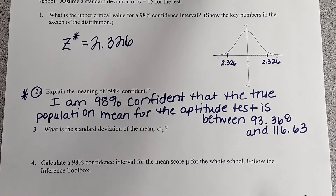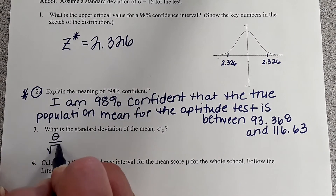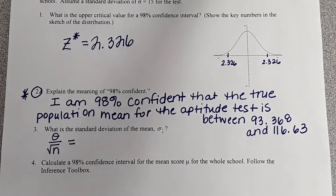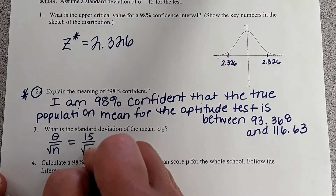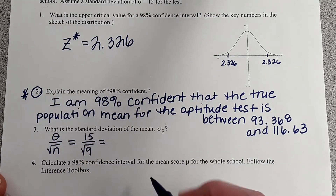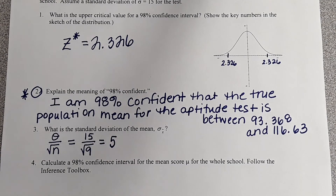The question becomes: what is the standard deviation of the mean, sigma-x-bar? What did we do last chapter? Sigma is 15, and our sample size is 9. So 15 divided by the square root of 9 equals 5. Why can we use the standard deviation for this problem? What allows us to use this?